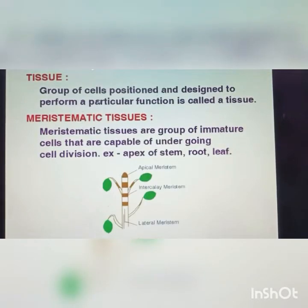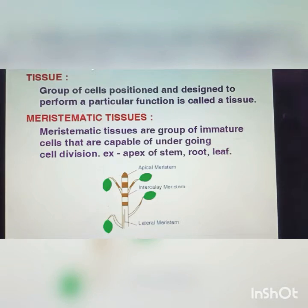Tissues. A group of cells positioned and designed to perform a particular function is called a tissue. Last year in class 8, we studied cells — plant cells, animal cells. A group of cells working together to perform a particular function is called tissue. Tissues are very important. Group of cells positioned and designed to perform a particular function is called a tissue.